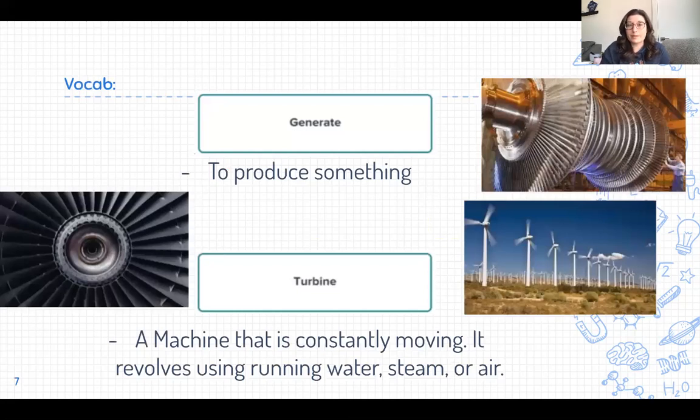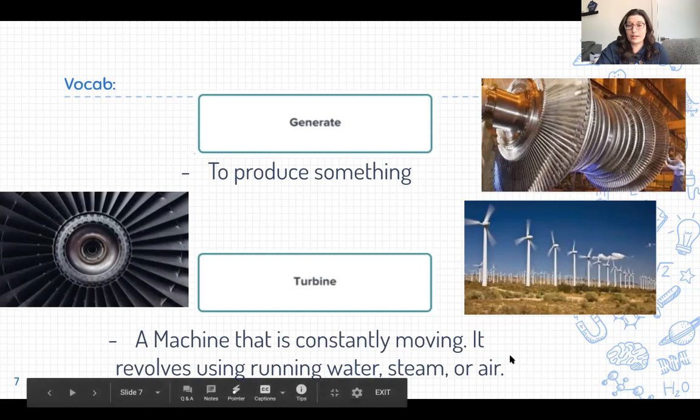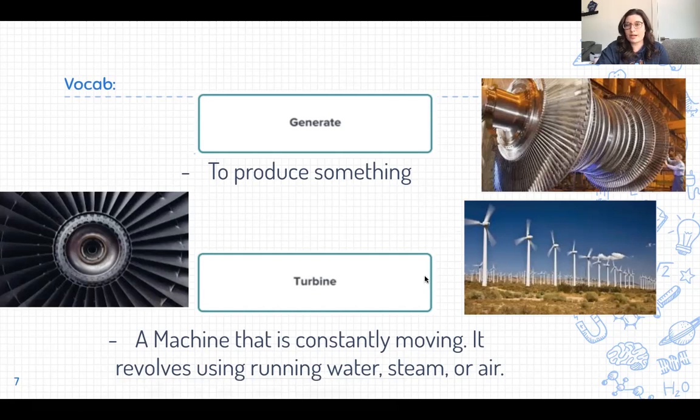Some more vocabulary terms. And for each of these terms, I would like you to write down the word, the vocabulary term, and the definition afterwards. Generate. This means to produce something. Turbine. A machine that is constantly moving. It revolves using running water, steam, or air. At this time, I would like you to add the vocabulary terms and definitions generate and turbine to your notebook page. Pause the video.